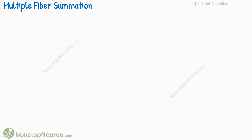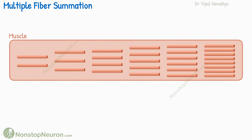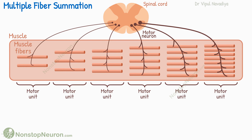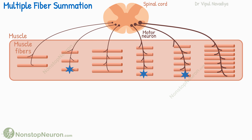Now let's talk about multiple fiber summation. This is a schematic diagram of a muscle. Each block inside represents a muscle fiber. As we have seen in the video on motor unit, one motor neuron supplies more than one muscle fiber. The group of muscle fibers supplied by the same neuron is called a motor unit. In this figure, I have shown six motor units. To generate more force, more motor neurons are stimulated, so multiple fibers contract simultaneously. The force generated by individual fibers is added together. This is called multiple fiber summation.